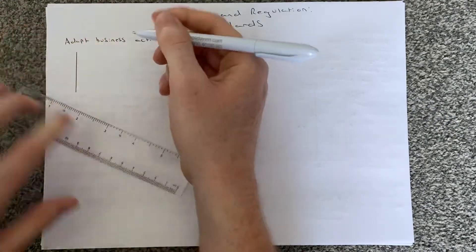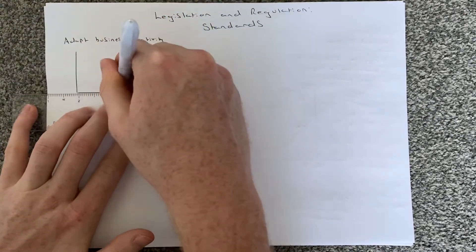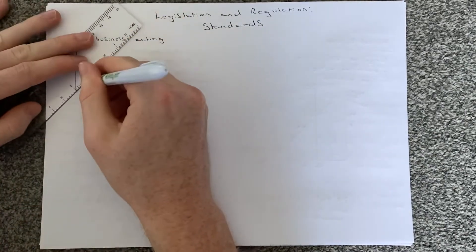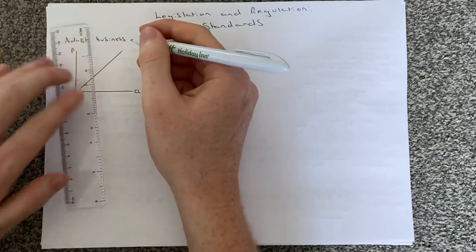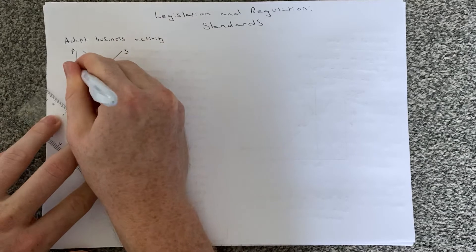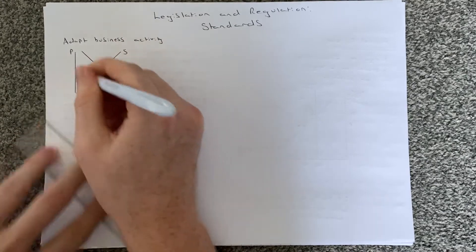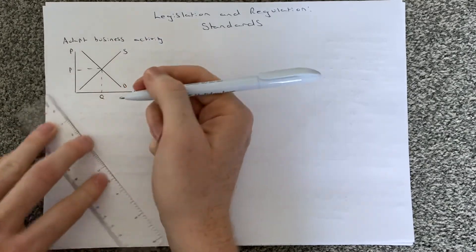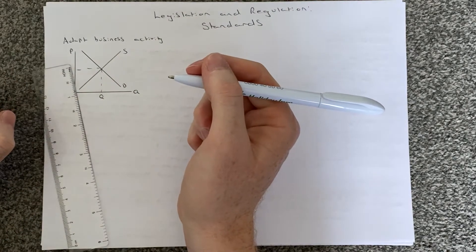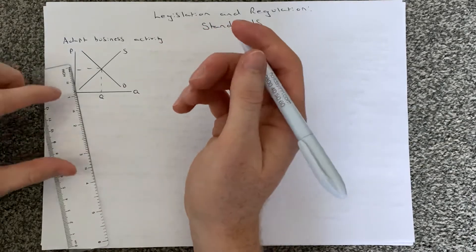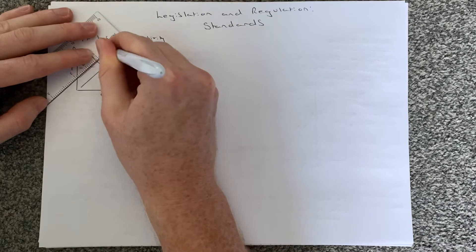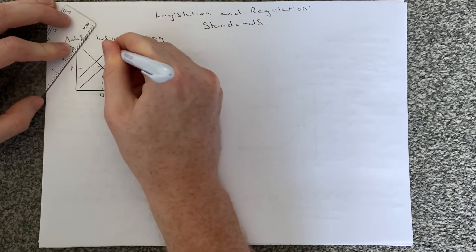First of all, I'm going to draw a quite simple demand and supply diagram. So: price on the vertical axis, quantity on the horizontal axis, an upward sloping supply curve, a downward sloping demand curve, labelled D and S, and we'll label the equilibrium price and quantity. As we said, if a business has to adapt how it behaves or change its activities, that's going to come at a cost. So we'd see an inward shift of the supply curve from S to S1.